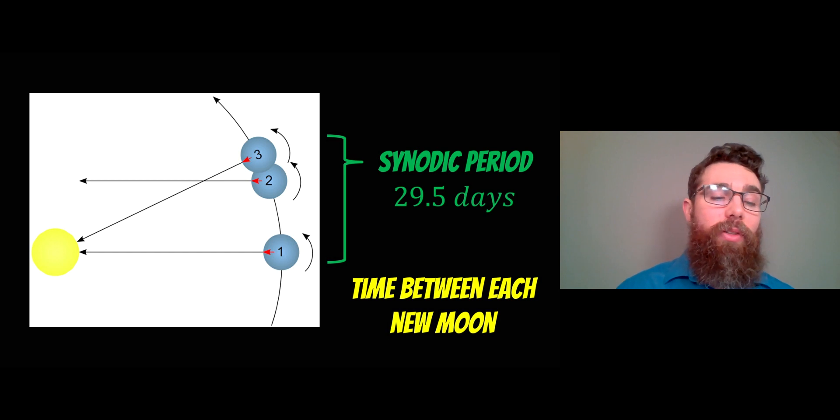But because the Earth is also orbiting the Sun, in order to get the same lunar phase, it's traveled a little bit further. It goes all the way around the Earth and a little bit more so that it's in the same orientation as it was before.